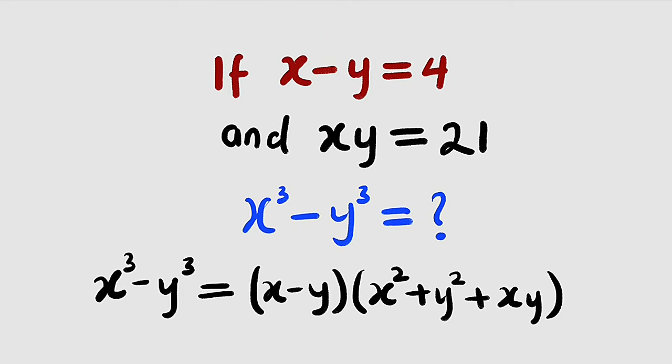So if you observe, we have x minus y as 4, we have xy as 21. The only thing that we are going to find is x squared plus y squared, and that can be obtained from the first equation.